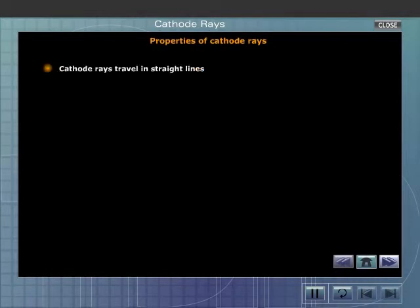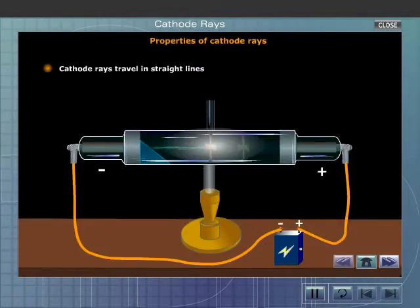Properties of cathode rays. Cathode rays travel in straight lines.